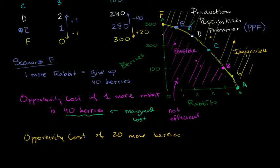So over here, what we're doing is we're saying, OK, I want to increase my berries by 20, but to do that, I have to decrease my rabbits by one. So the opportunity cost, assuming we are in Scenario E, the opportunity cost of 20 more berries is one rabbit. Now, this right over here is not a marginal cost, because I'm talking about the cost of 20 more units, not just one.